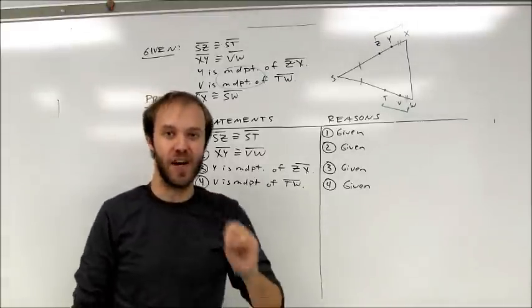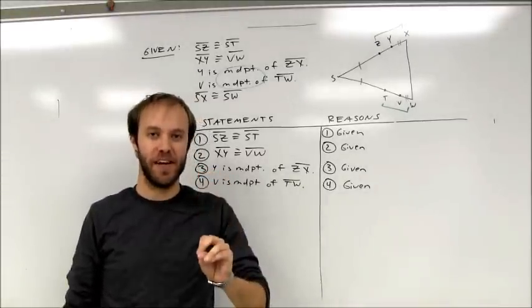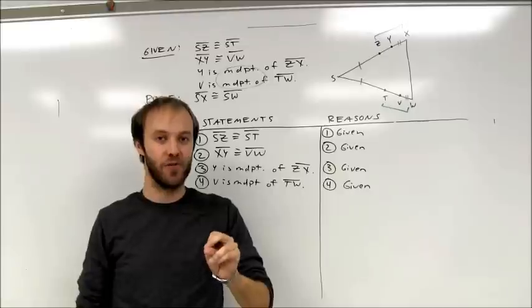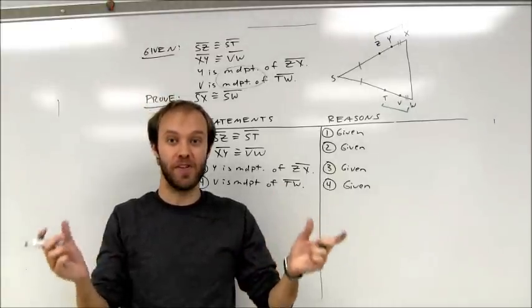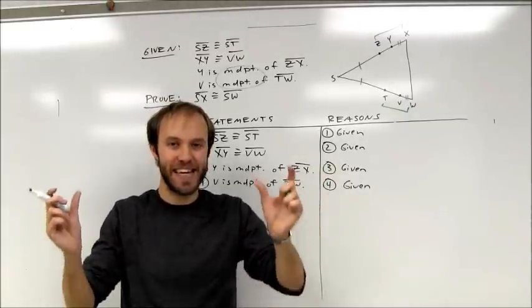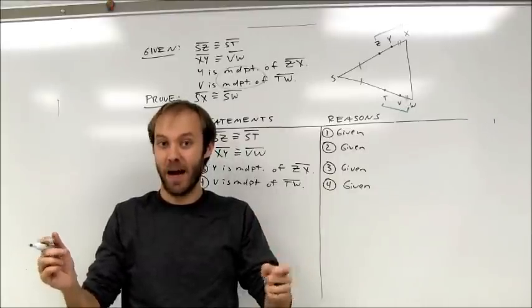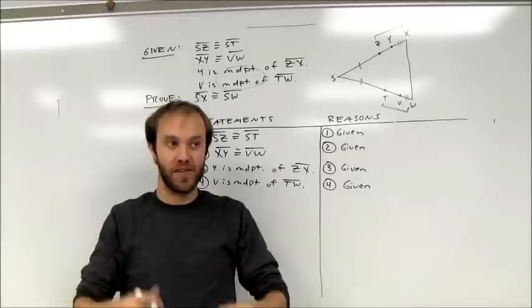I have double midpoint statements. And when I have double midpoint statements, most likely it's going to have something to do with one of the properties. Because it's telling me that two segments both have midpoints. The same thing is being done to both, which means that I'm going to have results that are the same as well.